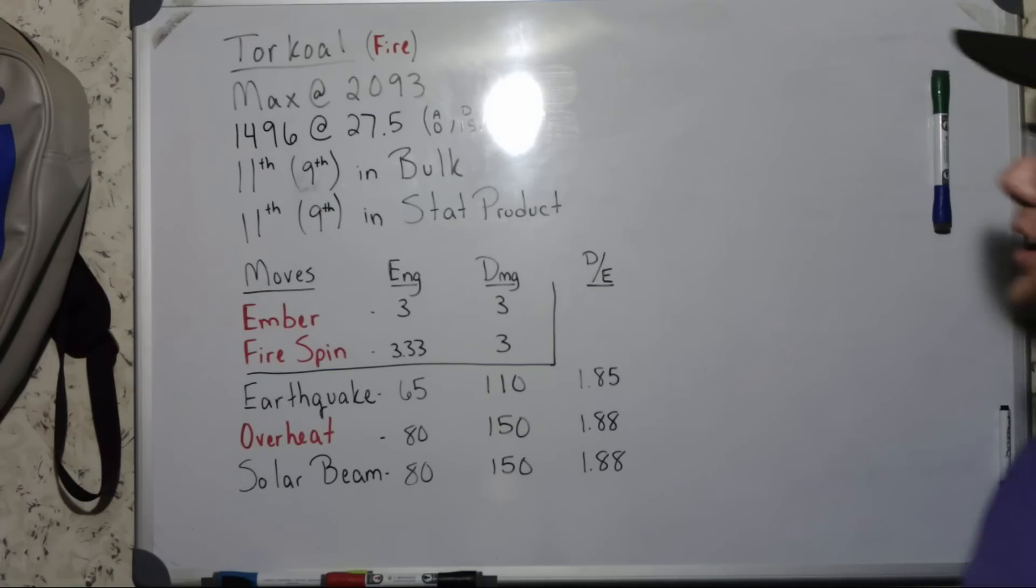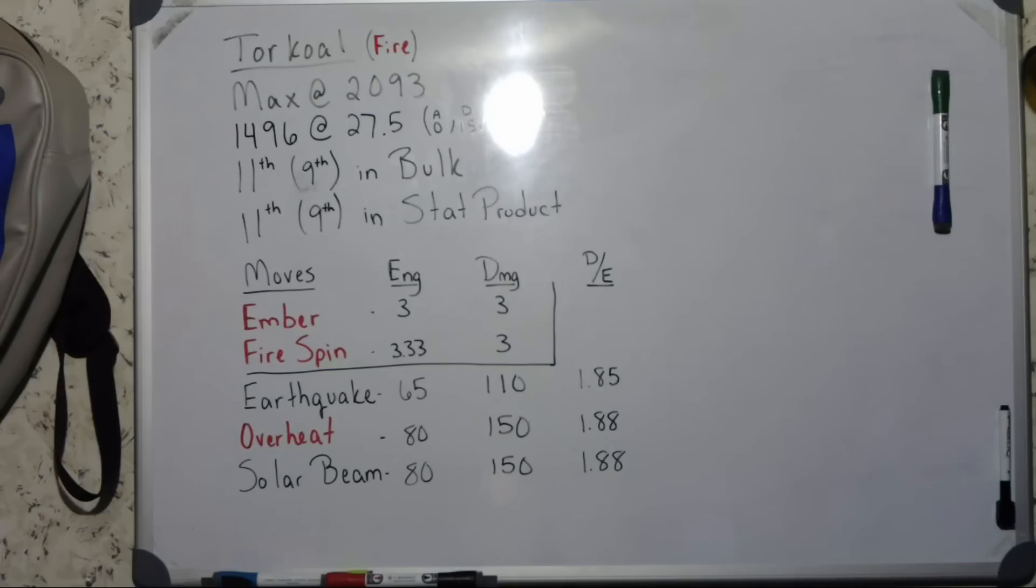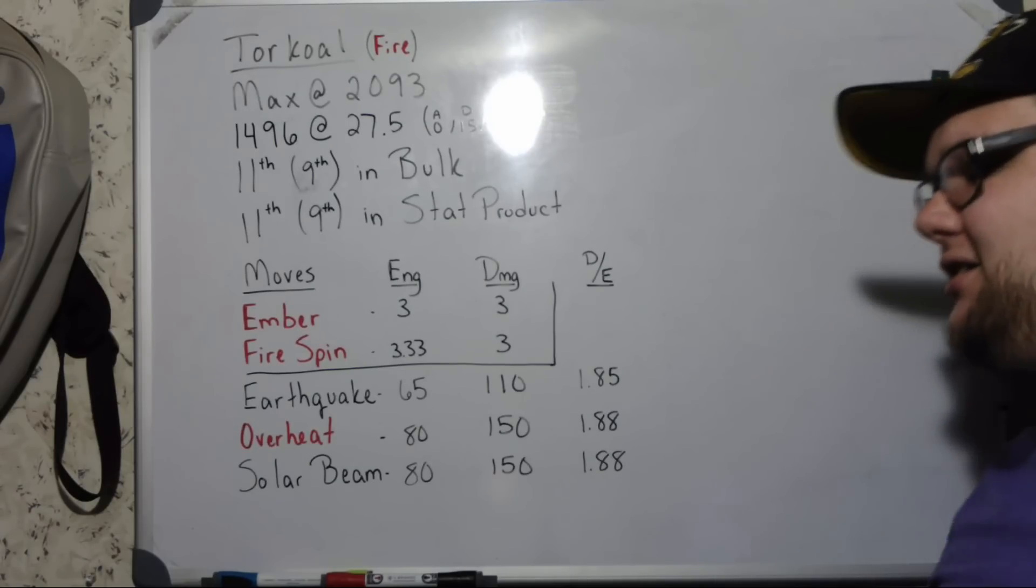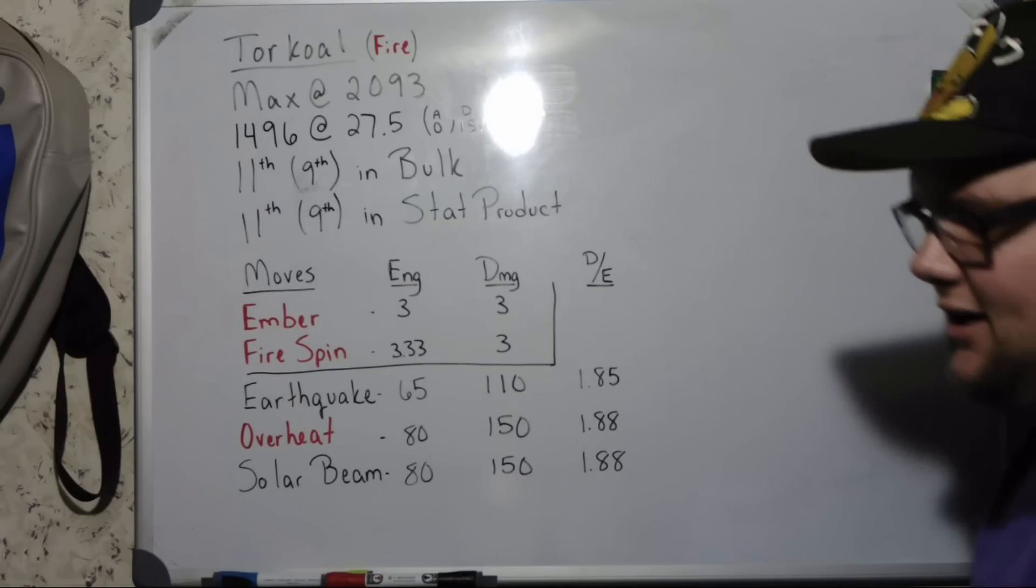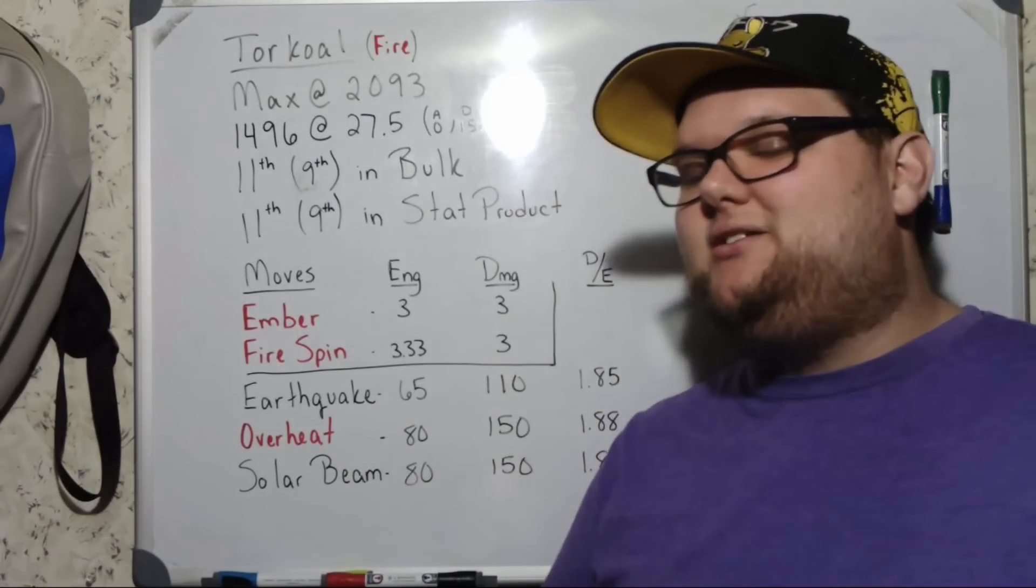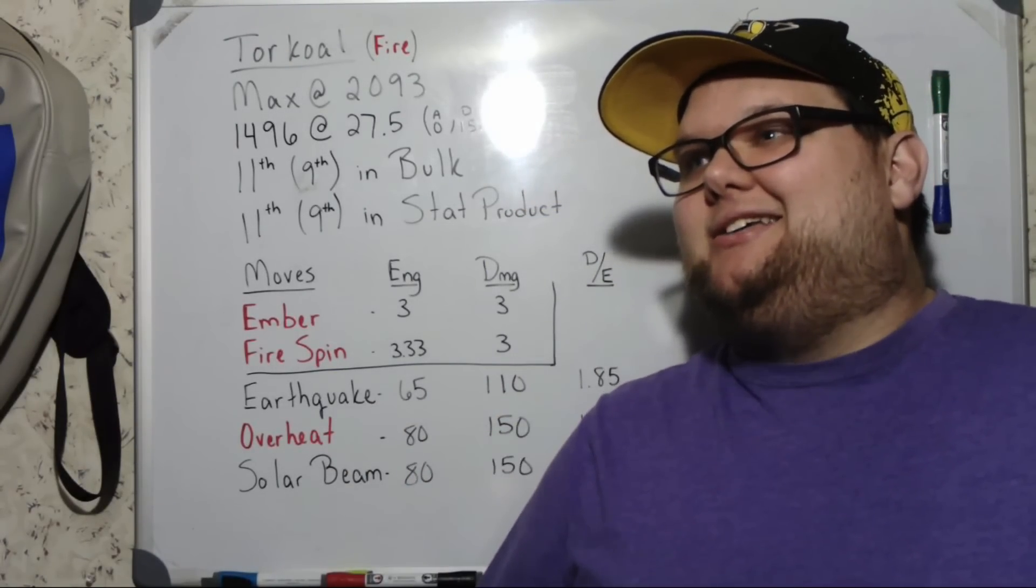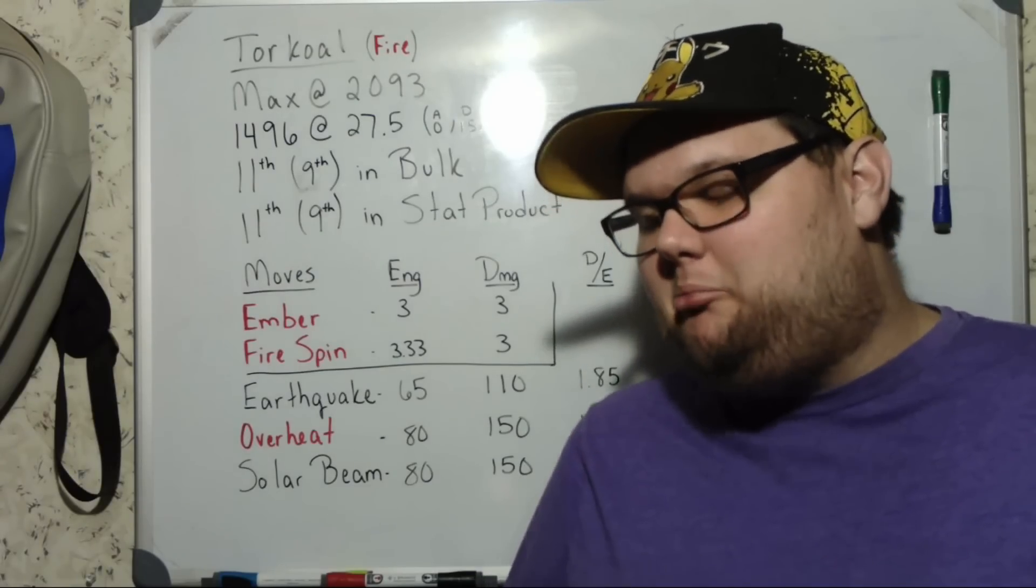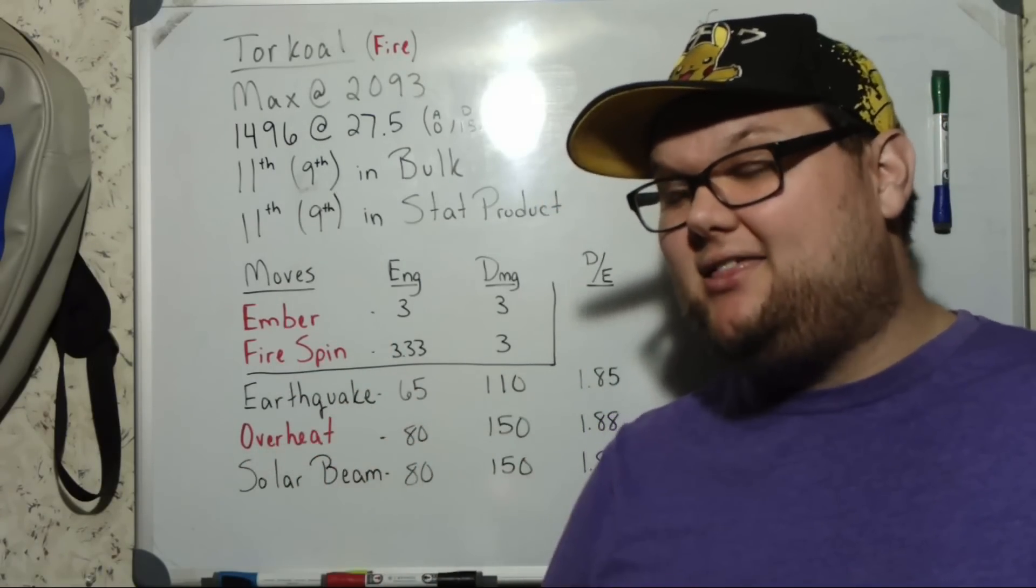In terms of pros and cons for Torkoal, let's go over our cons first. Our first con is that we do end up losing to both Bastiodon and Lapras. So being that we lose to two out of the three kings is kind of crappy. But like I said, Torkoal has a pretty big use case, and the fact that he can actually beat Lucario is a big deal.